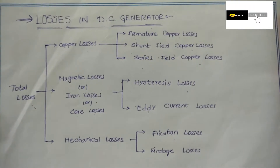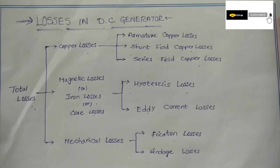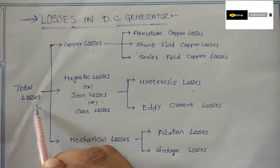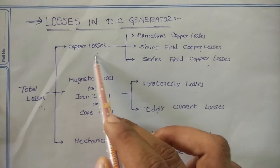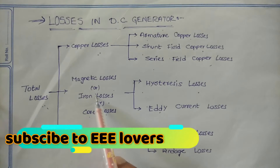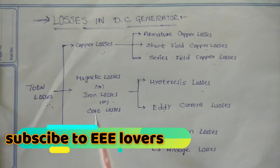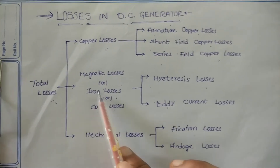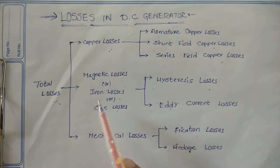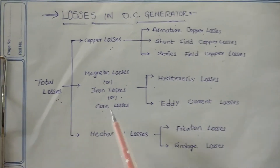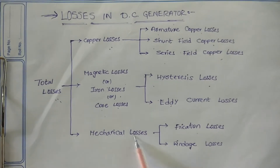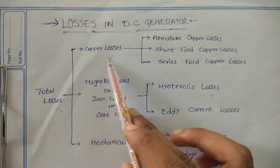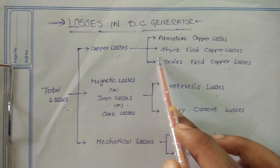Today we are going to discuss losses in DC generators. The total losses in a DC generator are: copper losses, magnetic losses (also called iron losses or core losses), and mechanical losses. These three categories cover all losses in the machine.